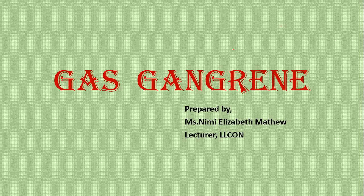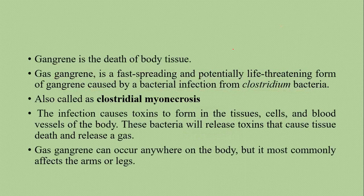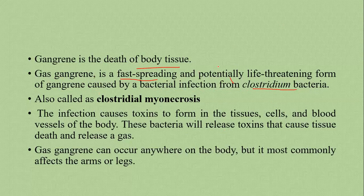Hi students, today let's discuss gas gangrene. Gangrene means death of body tissue. Gas gangrene is a fast-spreading and potentially life-threatening form of gangrene caused by bacterial infection from Clostridium bacteria. It is also called clostridial myonecrosis — 'clostridial' because it is caused by Clostridium bacteria, and 'myonecrosis' meaning death of tissue.